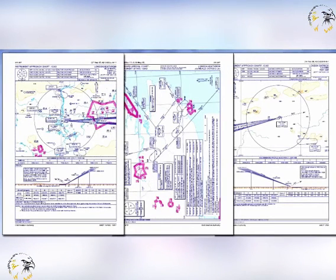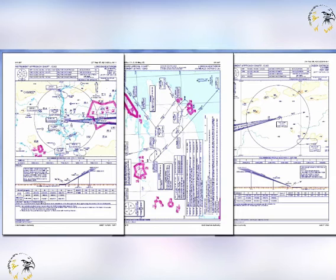Any aeronautical charts relating to aerodromes, instrument approaches and standard arrival or departure procedures, replicated in the aeronautical information publication, are to be in a form that allows easy distribution to users.